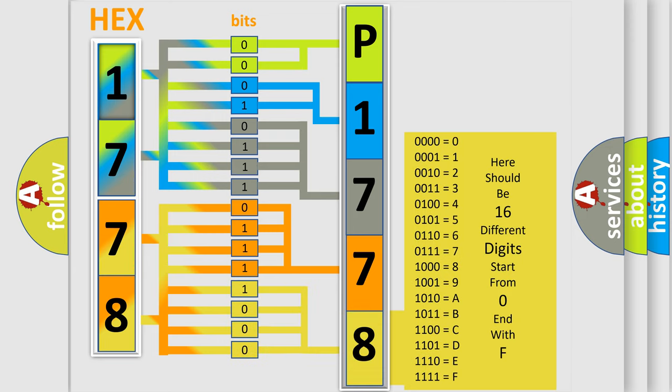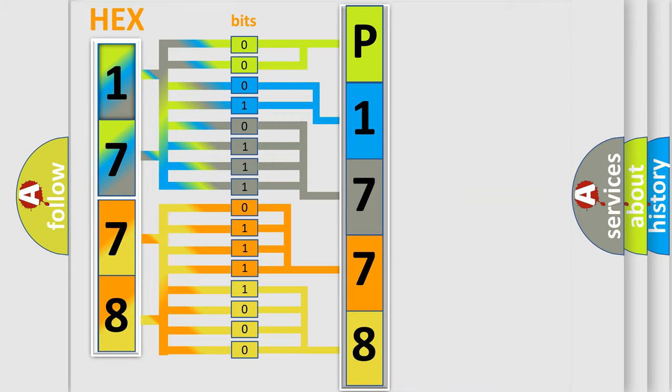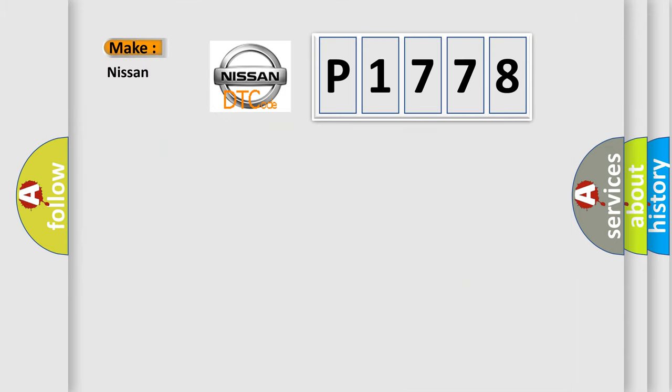We now know in what way the diagnostic tool translates the received information into a more comprehensible format. The number itself does not make sense to us if we cannot assign information about what it actually expresses. So, what does the diagnostic trouble code P1778 interpret specifically?